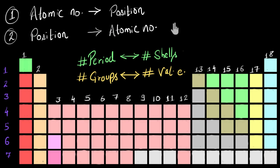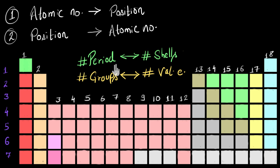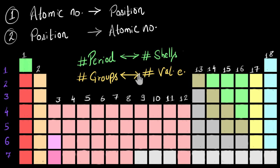To summarize this video: we saw how to find the position of an element given its atomic number, and vice versa. For this, you need to know how the period number relates to the number of shells with electrons, and how the group number relates to the number of valence electrons.